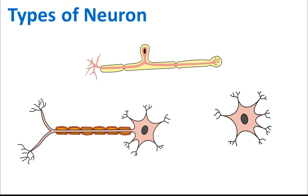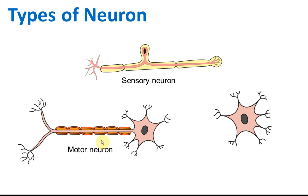There are three types of neurons and you need to identify them. The sensory neuron has the cell body and nucleus in the middle, with one end connected to the receptor — the sensory organ — where it receives the impulse, which then travels to the cell body. The motor neuron has one part connected to the effector — the muscle — and it receives the impulse, which travels to the cell body and is then transmitted out to the effectors.